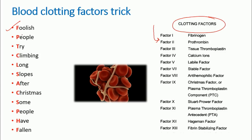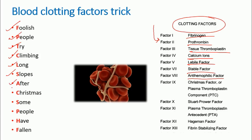Starting with F for 'foolish': factor 1 is fibrinogen. P for 'people': factor 2 is prothrombin. T for 'try': factor 3 is tissue thromboplastin. C for 'climbing': factor 4 is calcium ions. L for 'long': factor 5 is labile factor. S for 'slopes': factor 6 is stable factor. A for 'after': factor 7 is anti-haemophilic factor. C for 'Christmas': factor 8 is also anti-haemophilic, and factor 9 is Christmas factor.